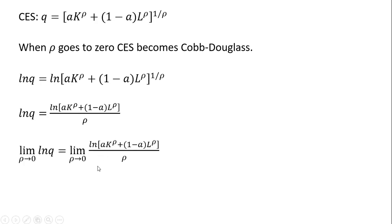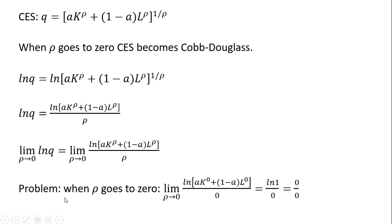Our next step is to see what happens to this function when rho goes to zero. The problem, however, is that when rho goes to zero, we're going to have a zero in the numerator and a zero in the denominator, so we get something that's indeterminate here.